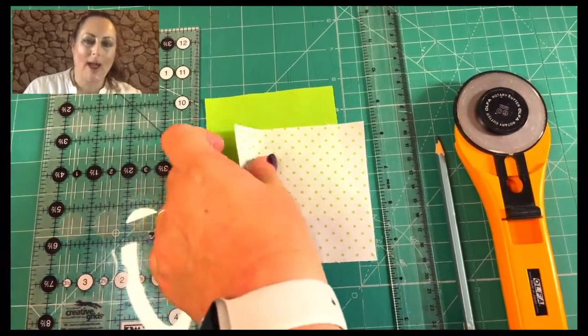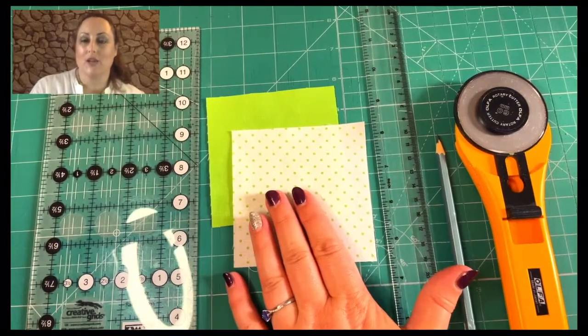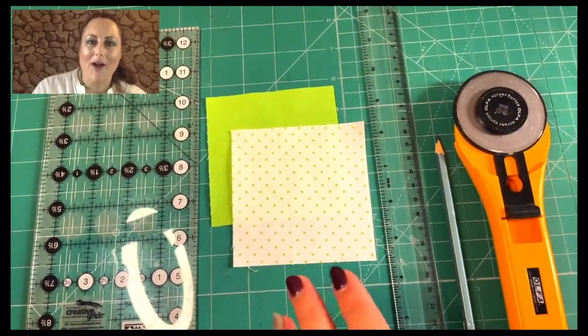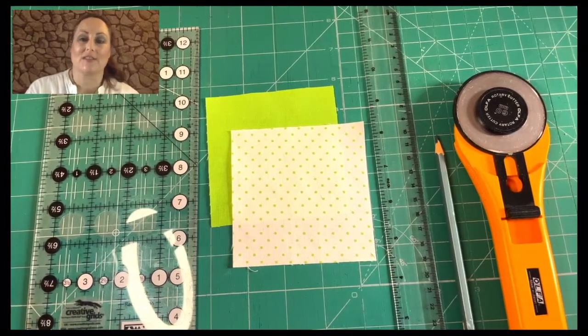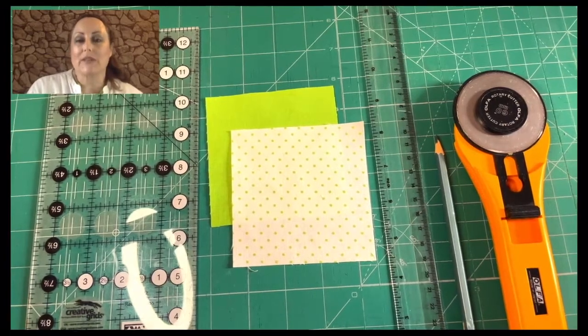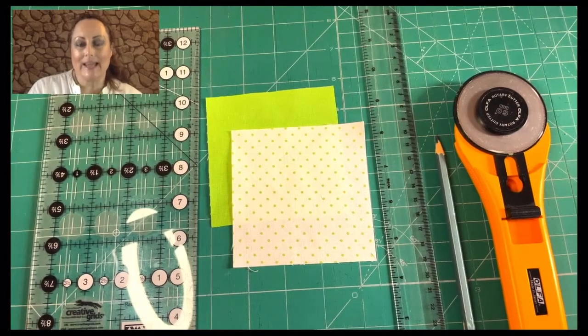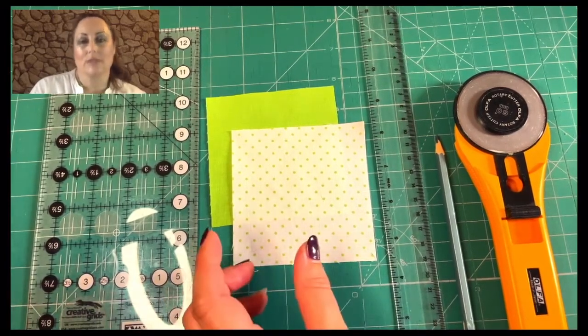Just our two squares. Now, if we want to finish, we need to start by working out what we want our finished size to be. So if we want our finished size to be a three inch square when it's all sewn together, that's our triangle.